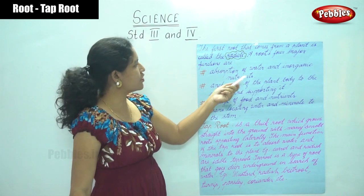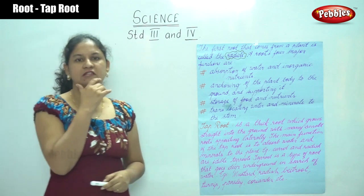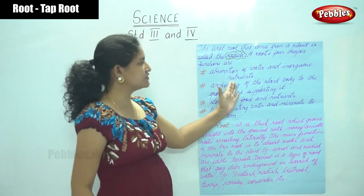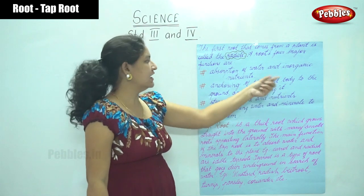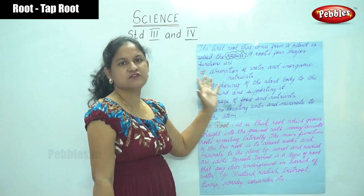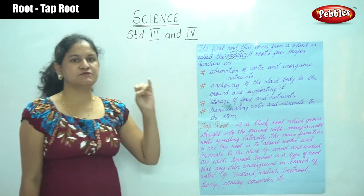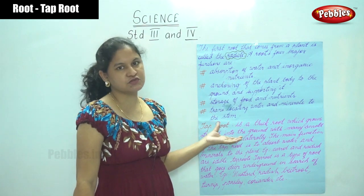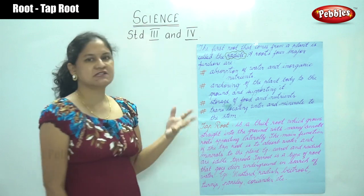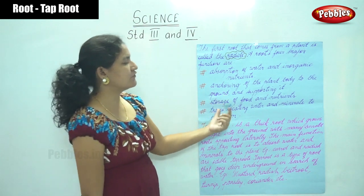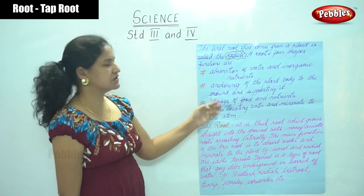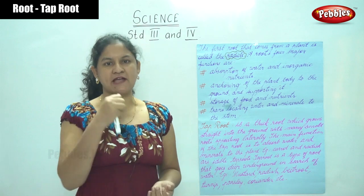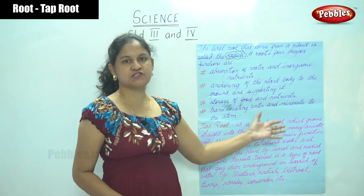A root has four major functions. The first is absorption of water and inorganic nutrients needed for the healthy growth of a plant. The second important function is anchoring of the plant body to the ground and supporting it.